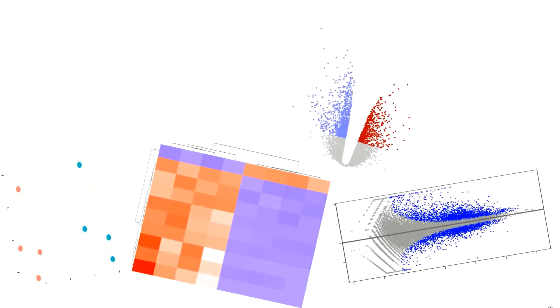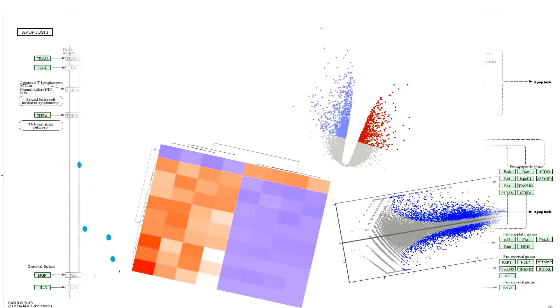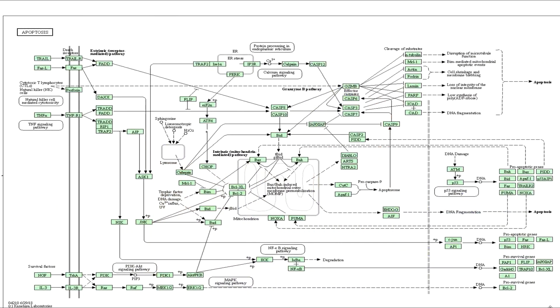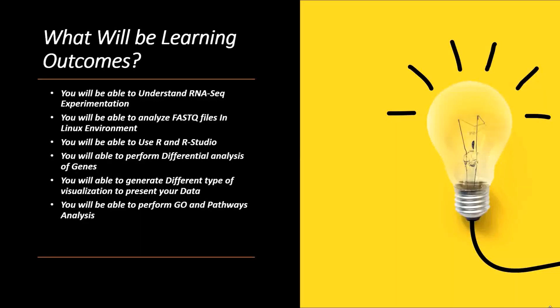At the end of this course, you will be quite comfortable building different types of visualizations to present RNA-seq data. These visualizations include the PCA plot, heat map, volcano plot, and MA plot. Moreover, you will also be able to carry out pathway analysis of your best genes. These are some of the learning outcomes of this course.